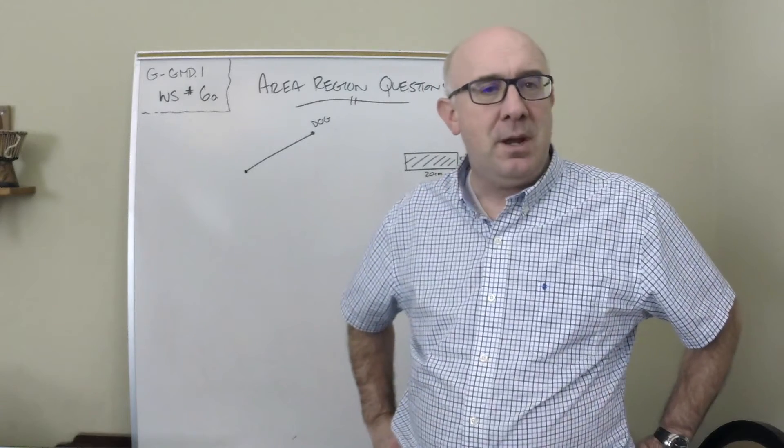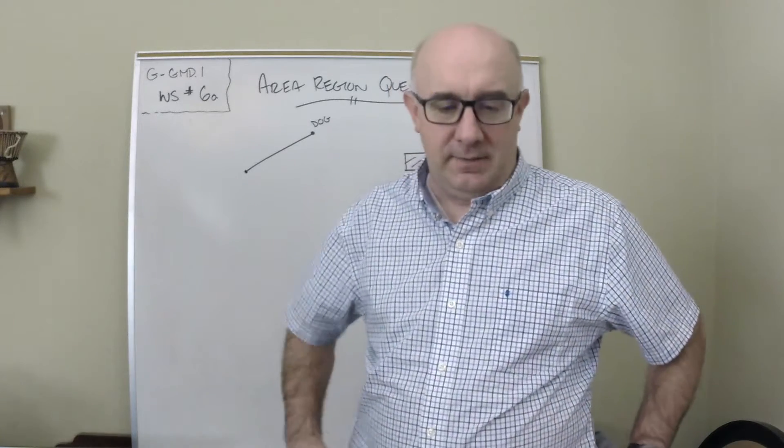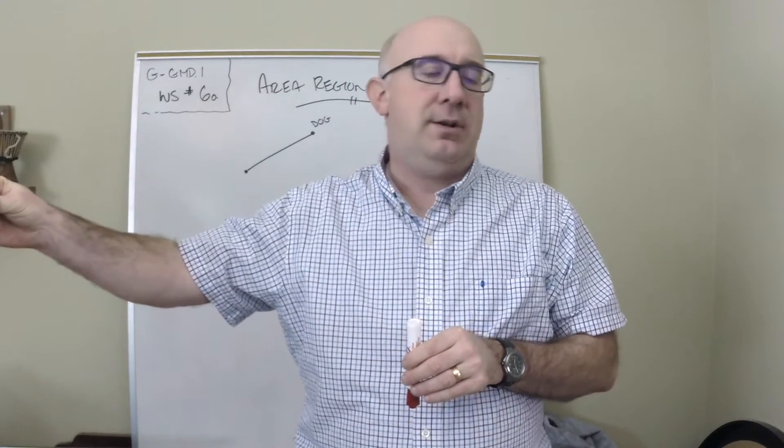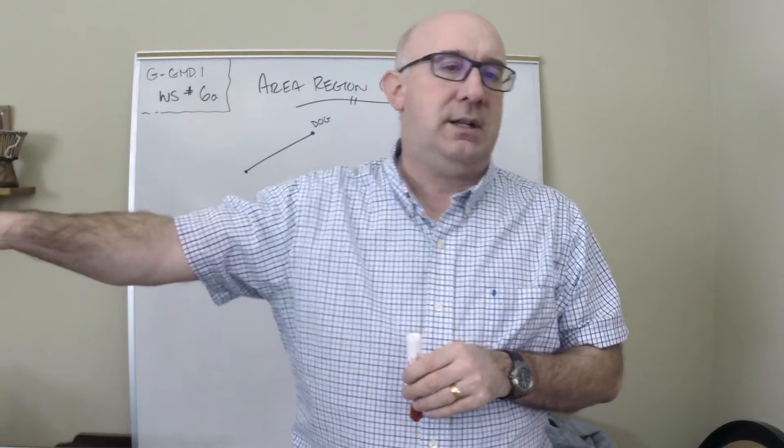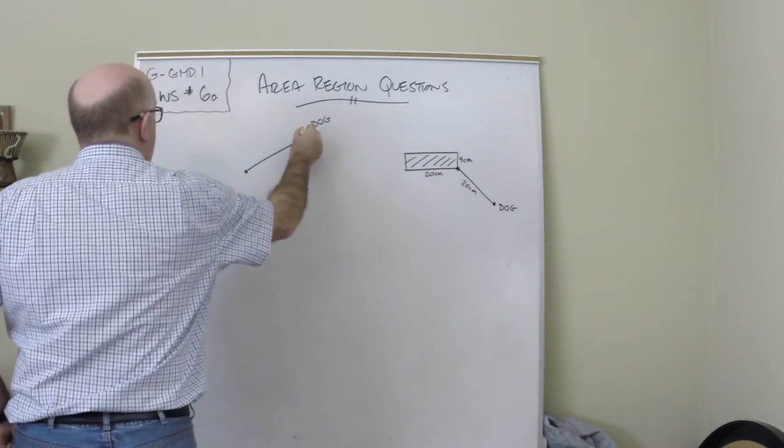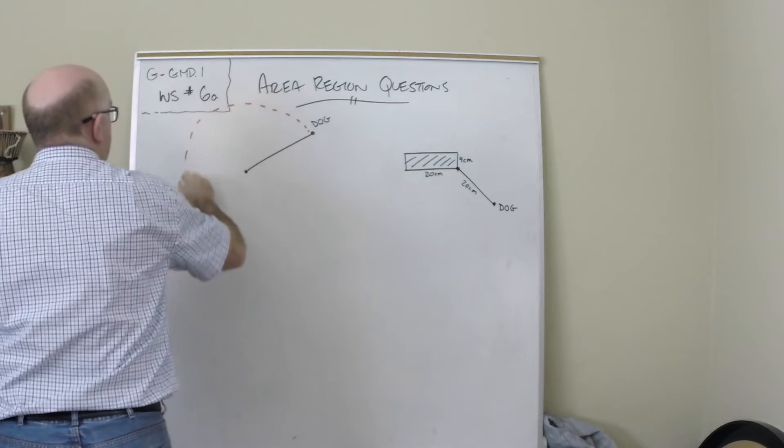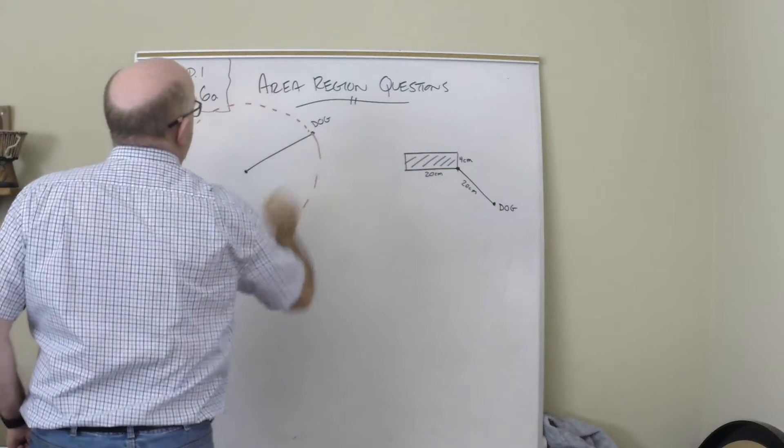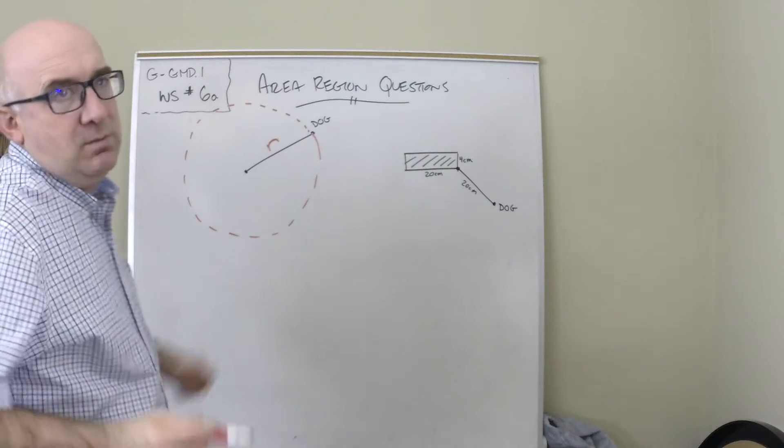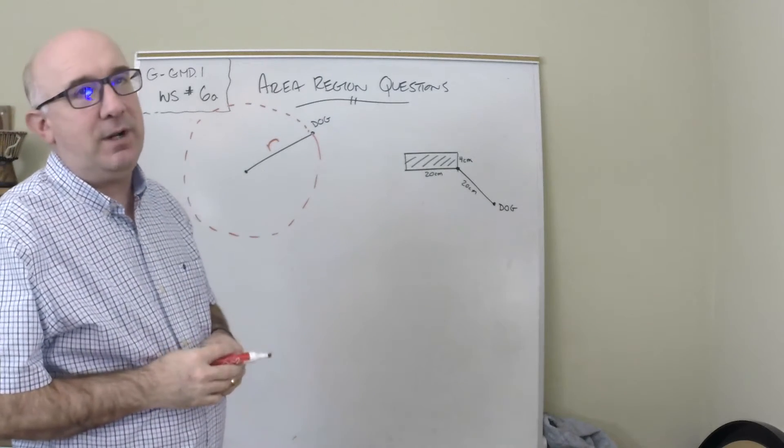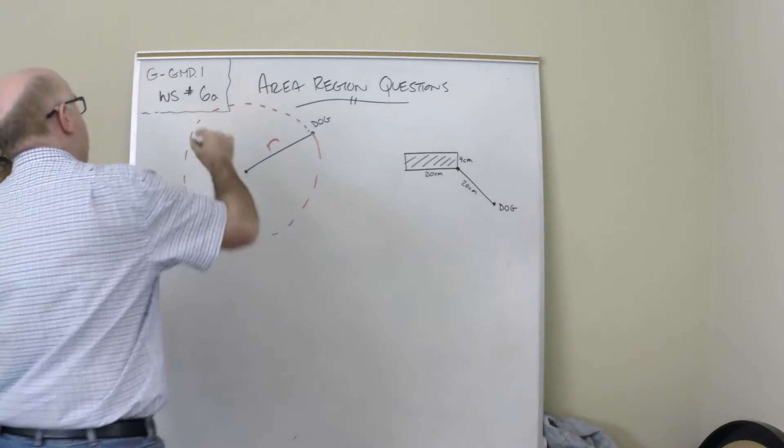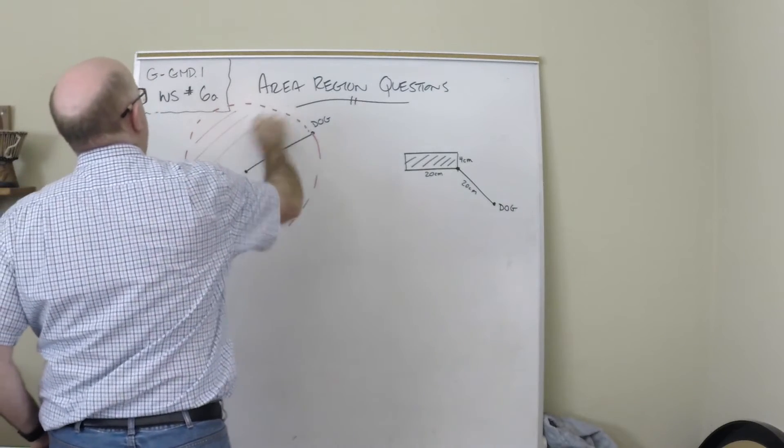Let's start with the basic idea. If I had a stick with a leash attached and the dog was allowed to run, it would create a circular path - a circular region where the leash length becomes the radius. Whatever the length of the leash is becomes the radius, and the dog can reach anywhere within that region.